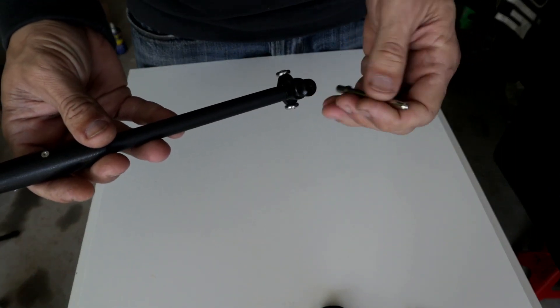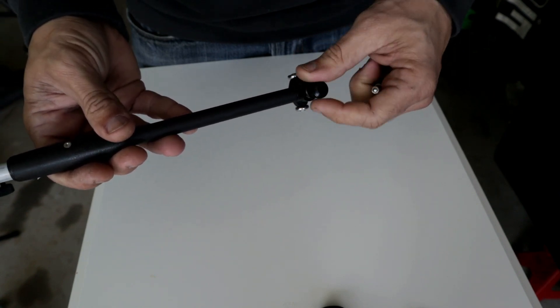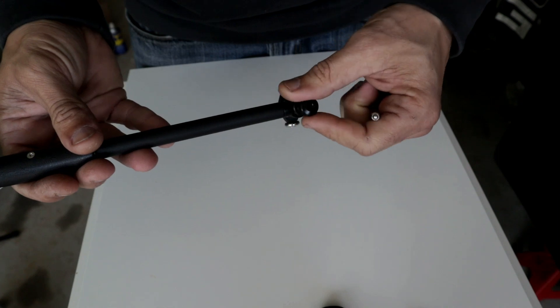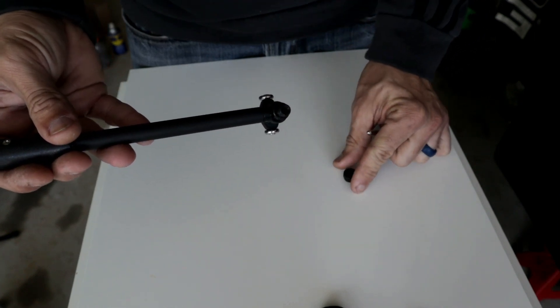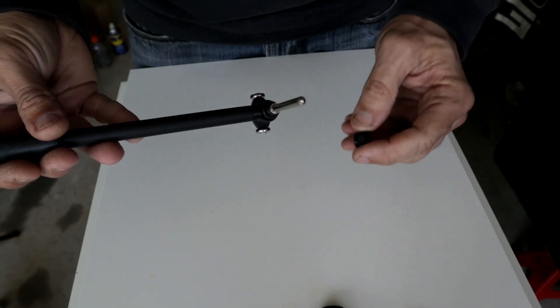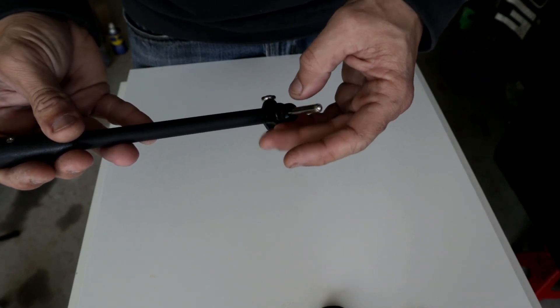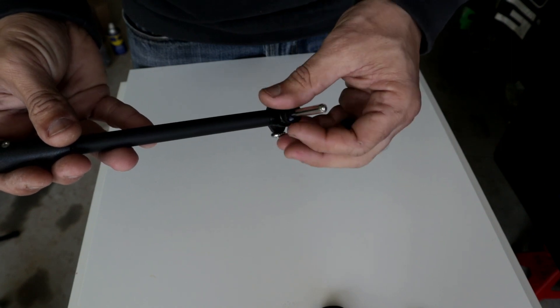Now that we have selected our probe, we're going to take this cap off, insert our probe, and we just want to finger tighten these. They don't have to be super tight. Don't use pliers or anything, just finger tight.